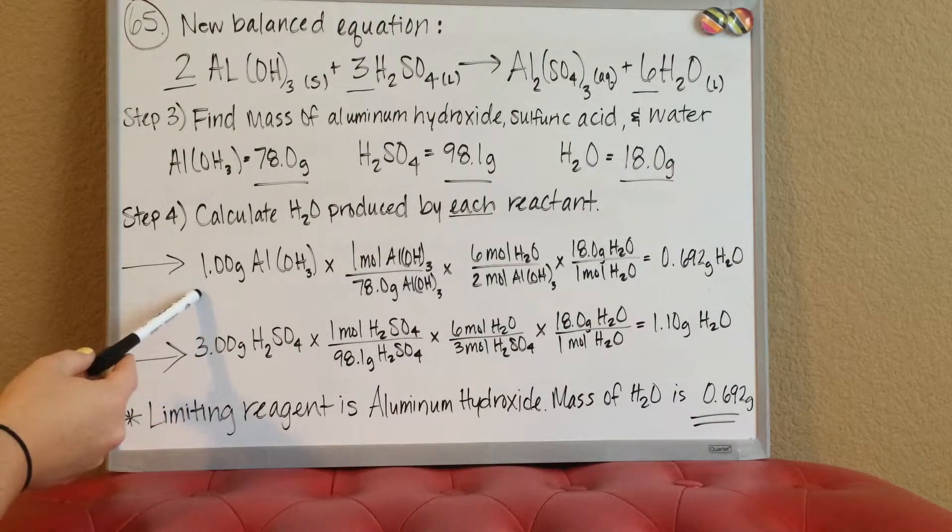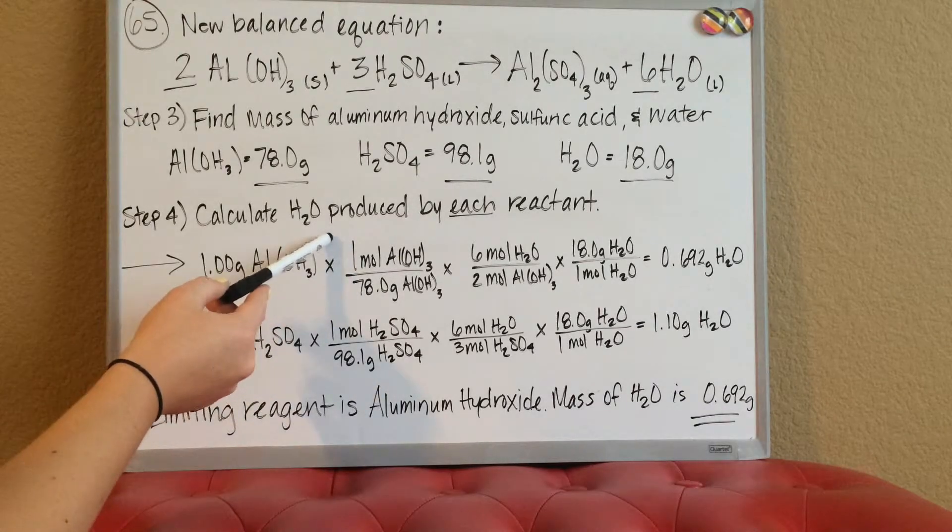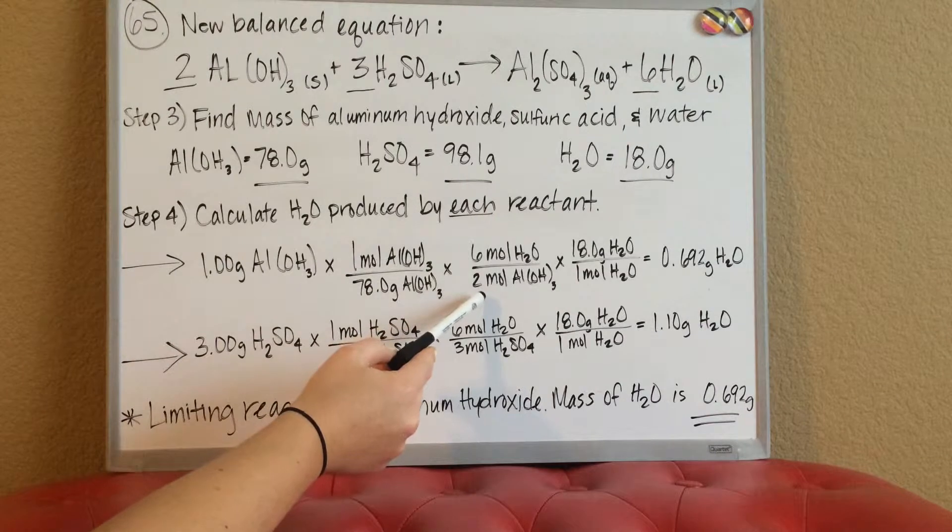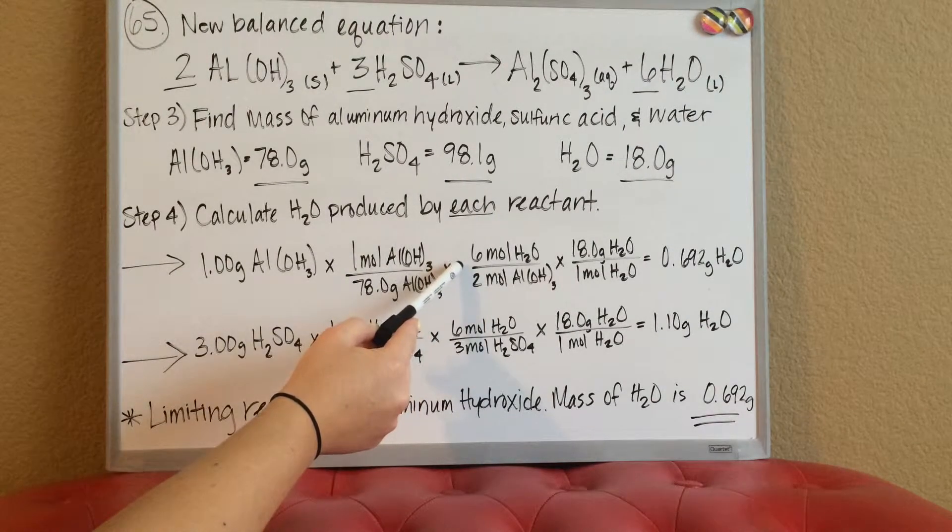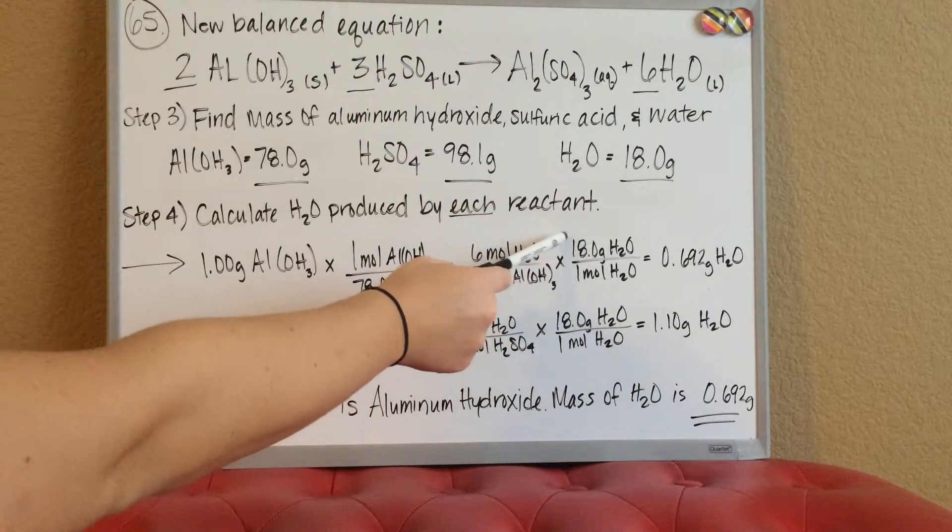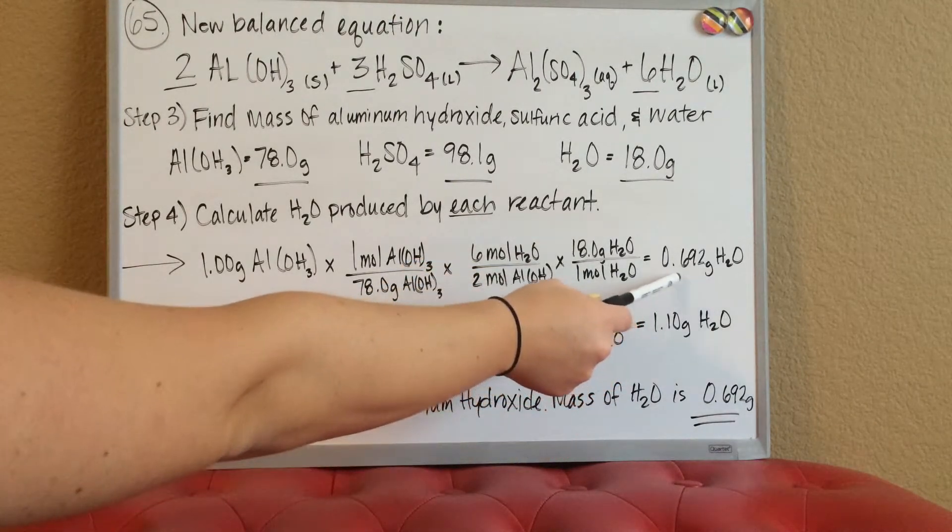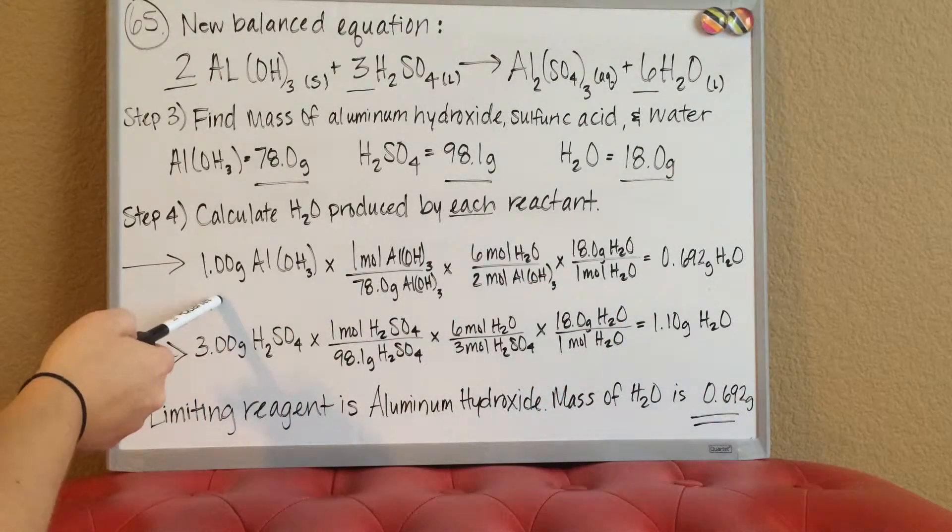With the given one gram of aluminum hydroxide, I'm gonna use the molar mass of aluminum hydroxide times the mole to mole ratio for aluminum hydroxide and H2O times the molar mass of H2O to finally get me the mass of H2O from the one gram of aluminum hydroxide.